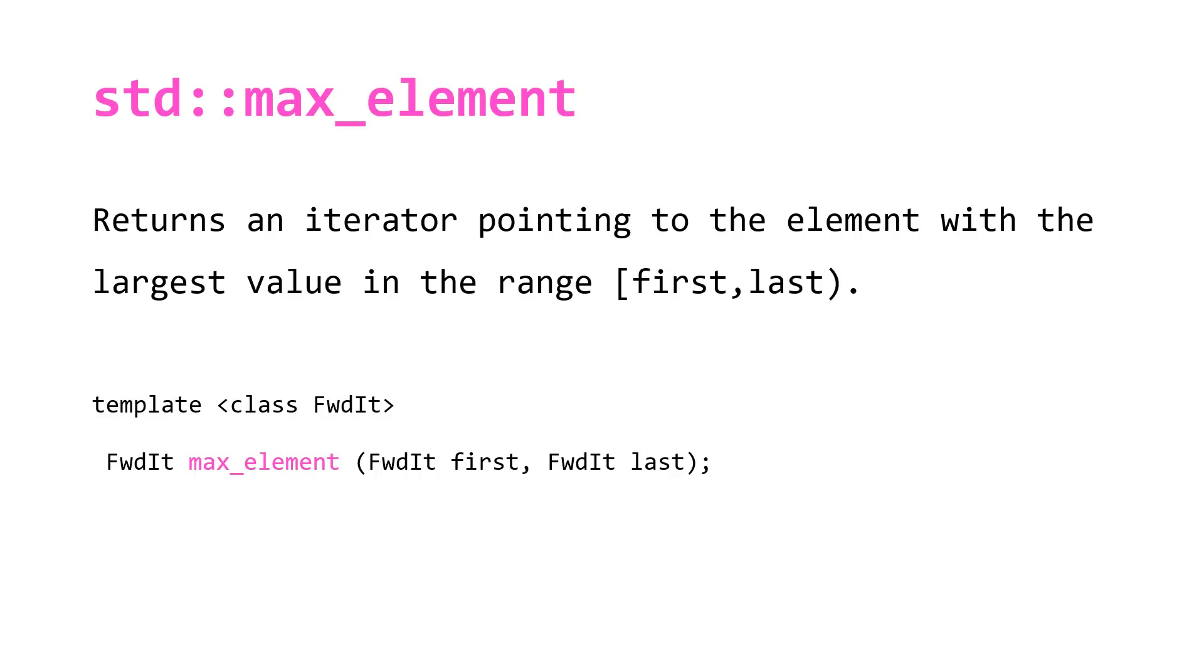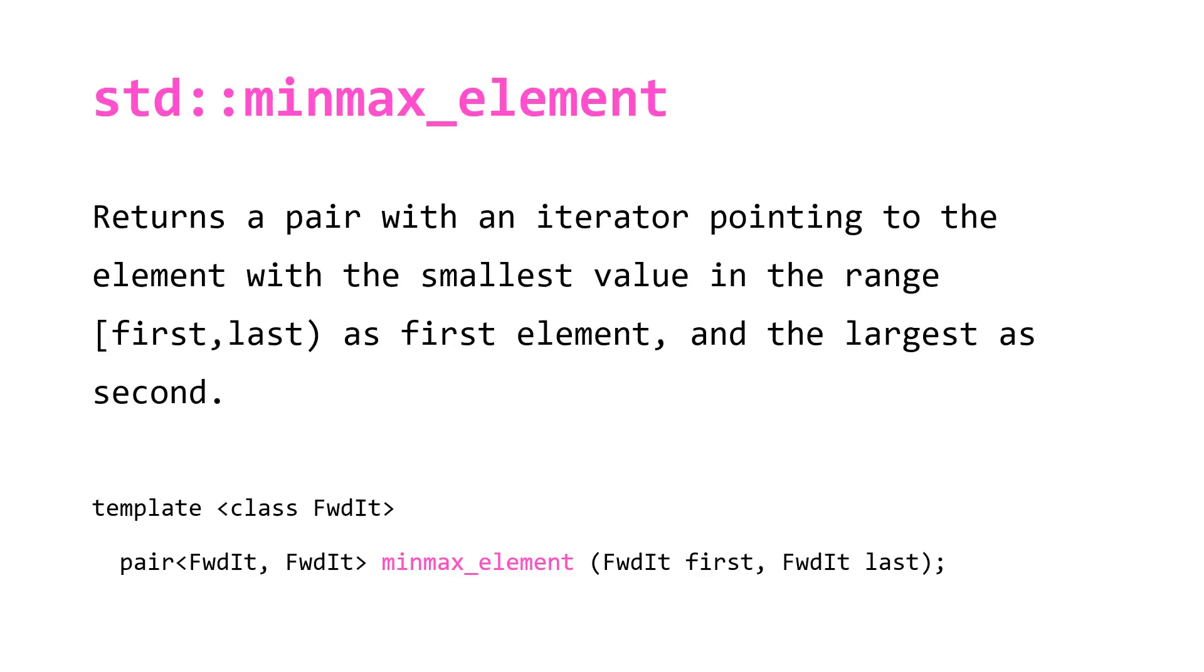max_element is the same thing but returns the largest value, an iterator pointing to the largest value. And minmax_element, similar to minmax, returns a pair of iterators pointing to the elements with the smallest value in the range as the first element and the largest as the second.